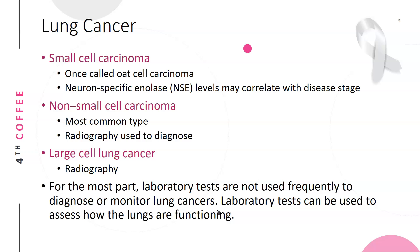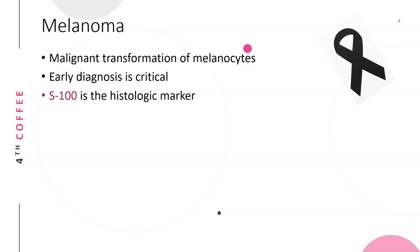Lung cancer has several types. Small cell carcinoma was once called oat cell carcinoma; neuron-specific enolase (NSE) levels can correlate with disease stages. Non-small cell carcinoma is the most common type of lung cancer, and radiography is used to diagnose it. Large cell lung cancer is also diagnosed using radiography. For the most part, laboratory tests are not used frequently to diagnose and monitor lung cancers, though they can be used to assess lung function with ABG analysis.